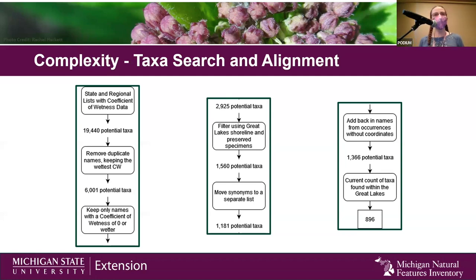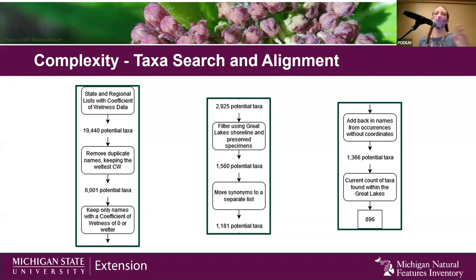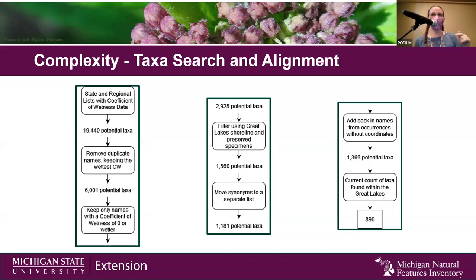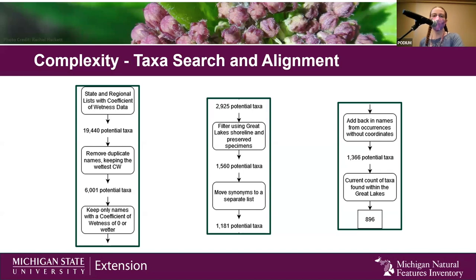Next, we filtered things geographically. Those lists included everything from the very north of Ontario and the very south of Indiana and everywhere in between, so we wanted to filter out things we were very unlikely to see in the Great Lakes themselves. And then the last step — sort of in parentheses — is adding back in things that we filtered out that shouldn't have been geographically filtered out because of the way we did it. That was our taxa search and alignment.